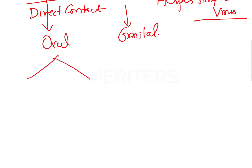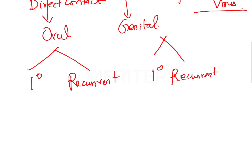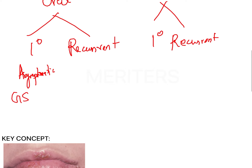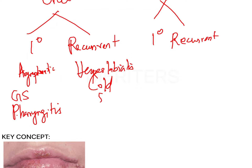For oral lesions, we have two types again — primary lesion and recurrent lesion. In the primary lesion, it is usually asymptomatic. In kids it is called gingivostomatitis; in adults it causes pharyngitis. The recurrent form is called herpes labialis — cold sore of the mouth. This is important in herpes.